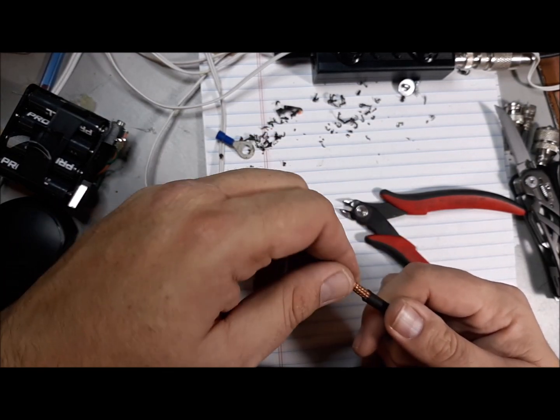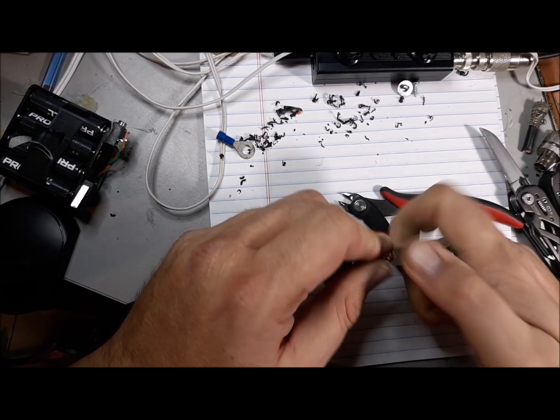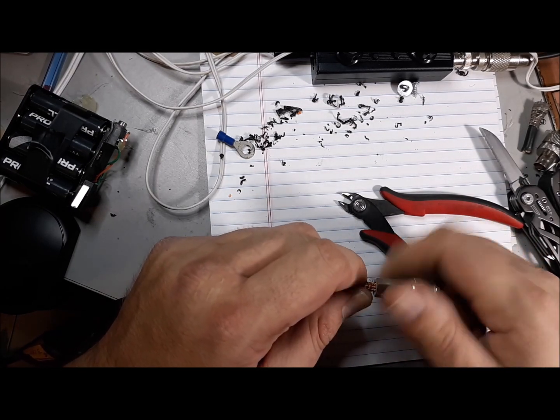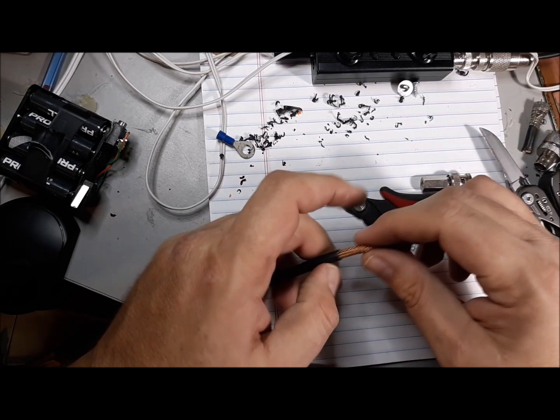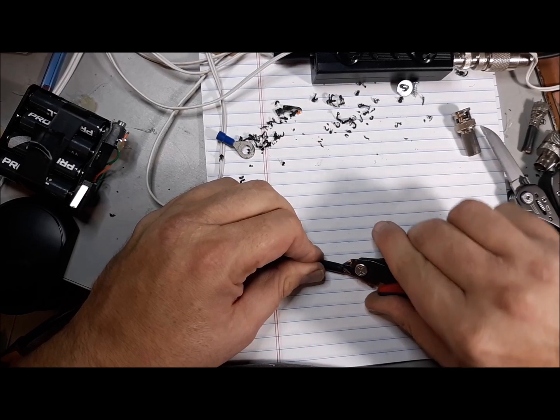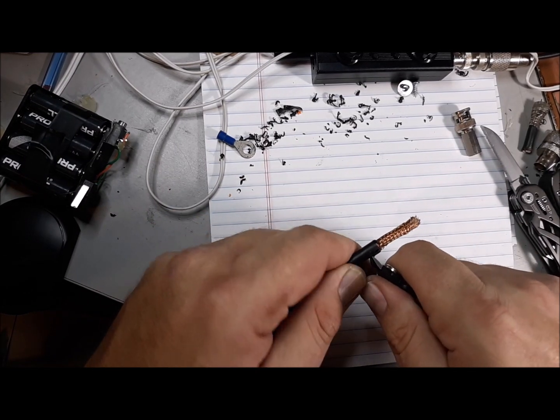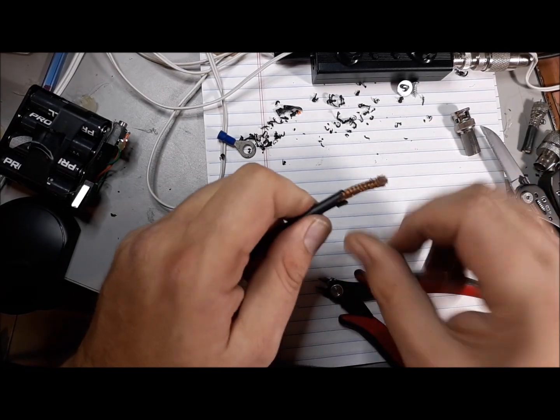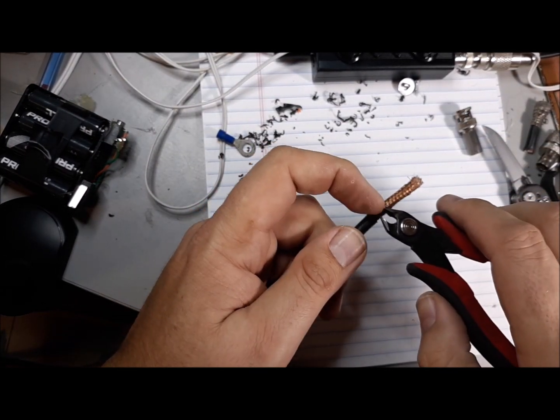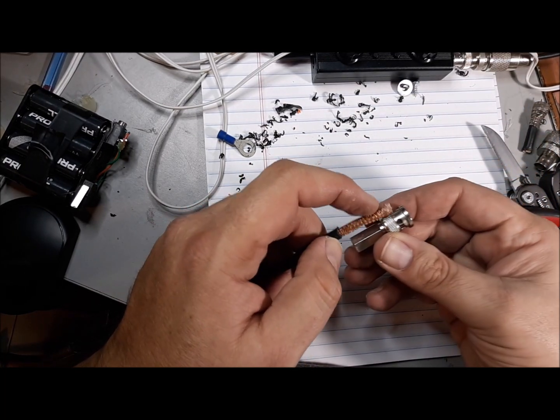Now the question is can I get this on there? It's threading over the braid, so that's good. Should have cut more off of that, cut a little bit more of the sheath off of it. There we go. I'm guessing I need to cut to around here, so we'll cut off the shield.